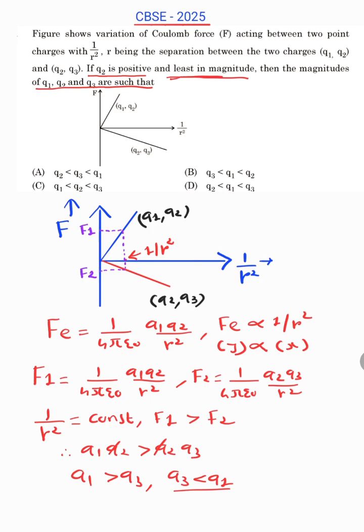And here it is given that Q2 is positive and least in magnitude. So Q2 is the smallest value. So we can say that Q2 is less than Q3 is less than Q1. So your answer is option A.